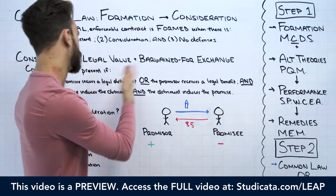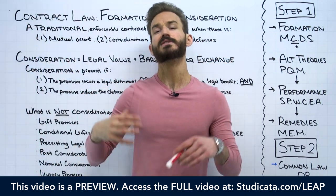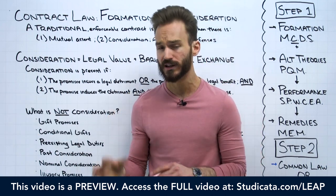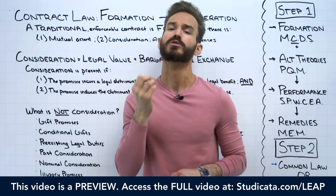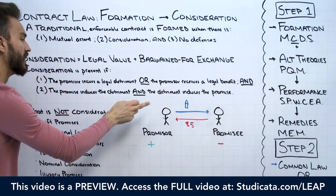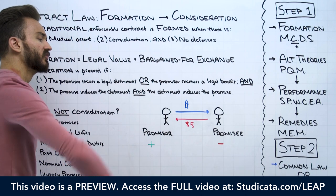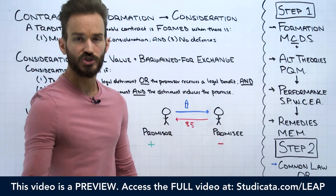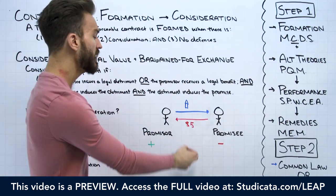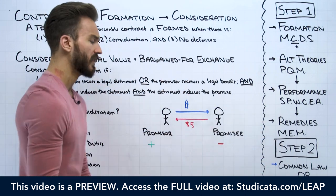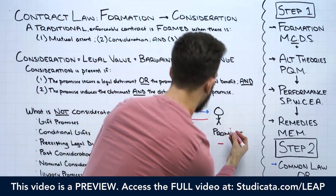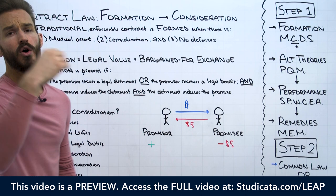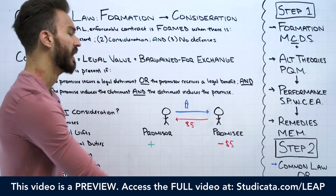A legal detriment is simply either an action or a forbearance — where the promisee is taking an action they are not otherwise legally obligated to undertake, or forbearing from something they're legally permitted to do. Is the promisee taking an action they would otherwise not be legally obligated to undertake? Yes — the promisee is paying me $5 that they have no legal obligation to otherwise pay. So the promisee is incurring a legal detriment of $5.